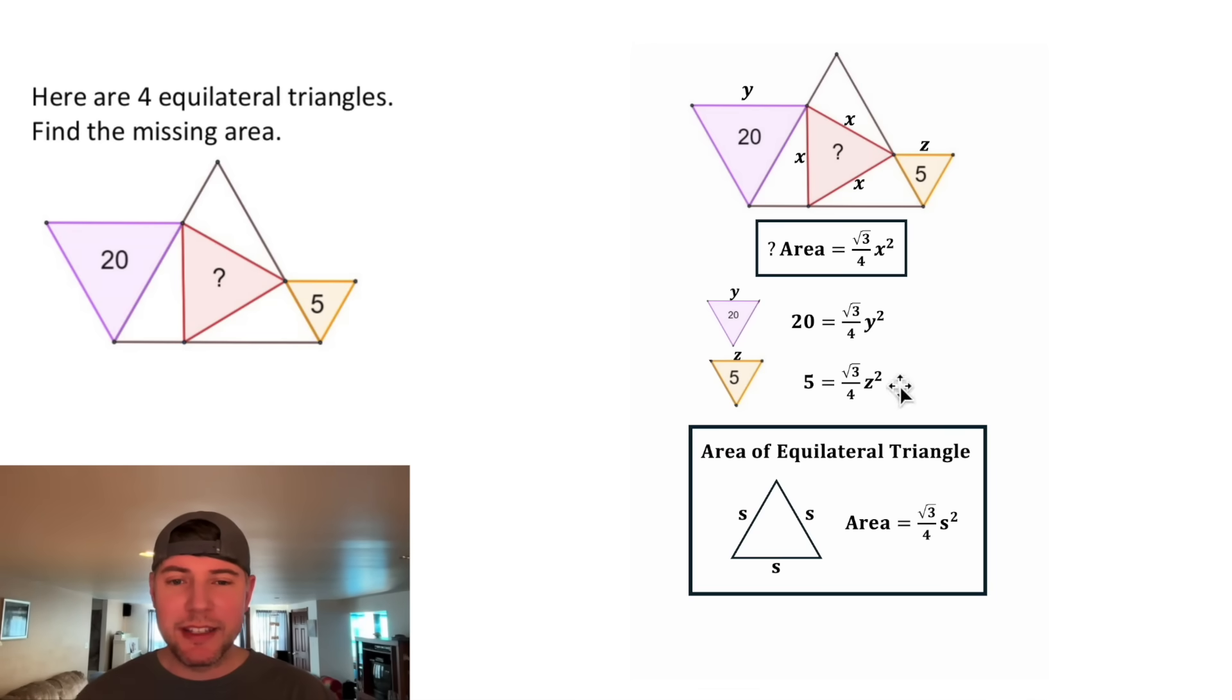Our goal is to get y and z all by themselves. Let's multiply both sides of both equations by the reciprocal of this fraction, 4 over square root of 3. On the left-hand side of the top one, we can do 4 times 20 to give us 80, and that'll be 80 over root 3. For this one, 4 times 5 is equal to 20, and that'll give us 20 over root 3.